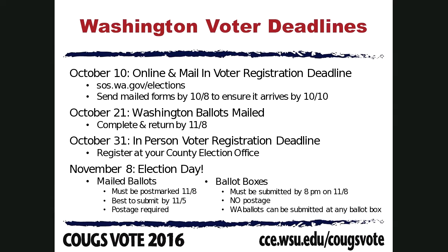If you are not registered to vote and you want to vote, the deadline is October 10th — that's for the online or mail-in voter registration deadline. You can register online at sos.wa.gov/elections, which is the Secretary of State website. If you're mailing in a form, you want to send it by Friday, because Monday the 10th — the deadline — is Columbus Day, so banks and the post office won't be open. You should mail it by October 8th.